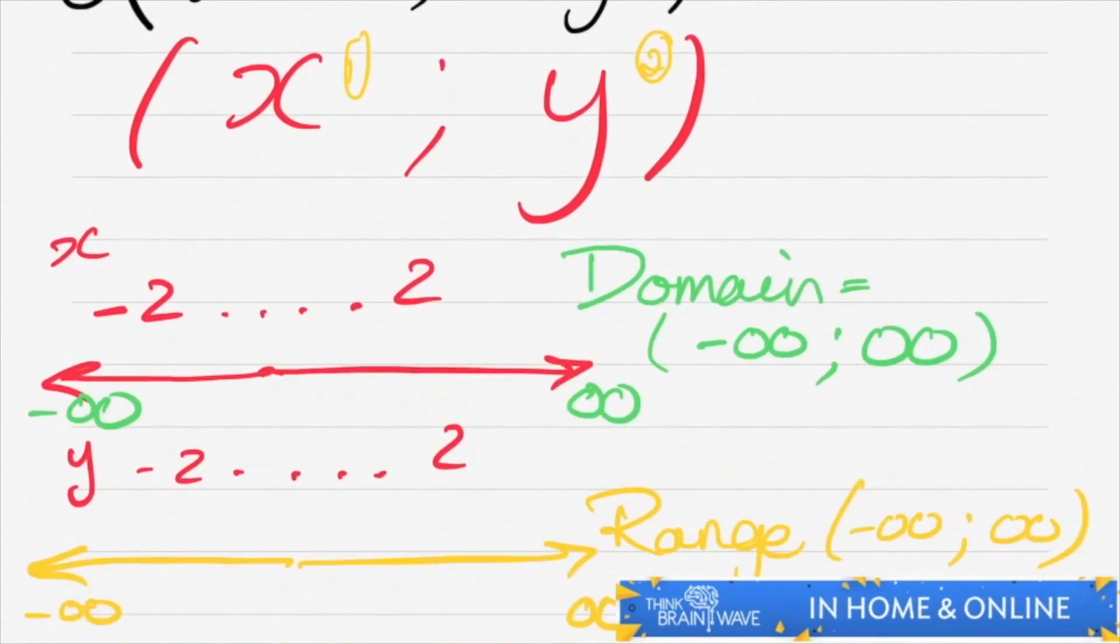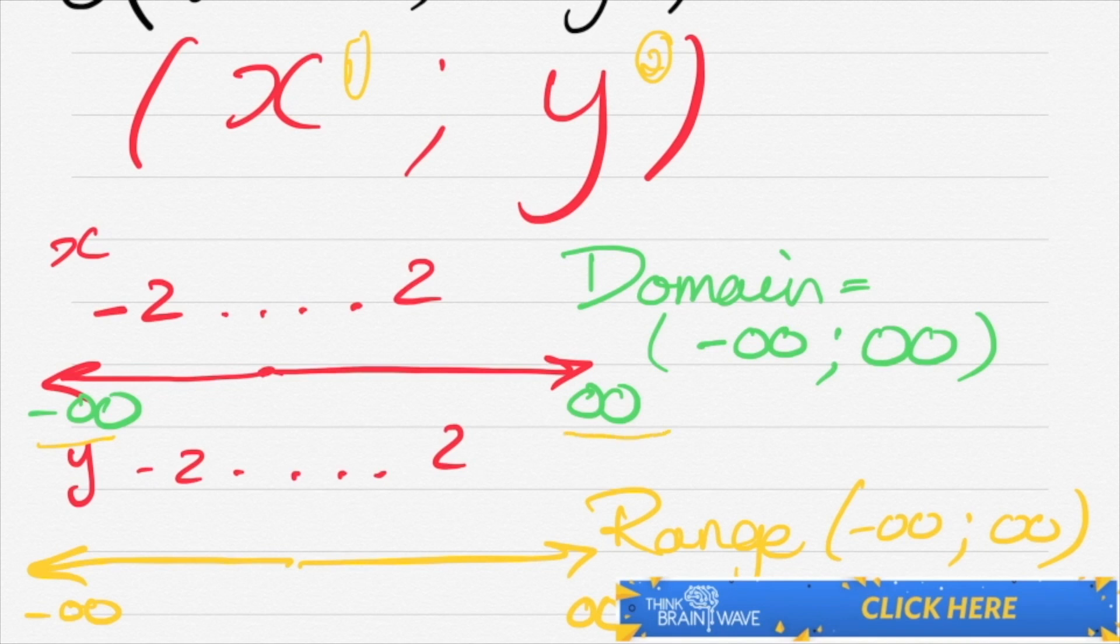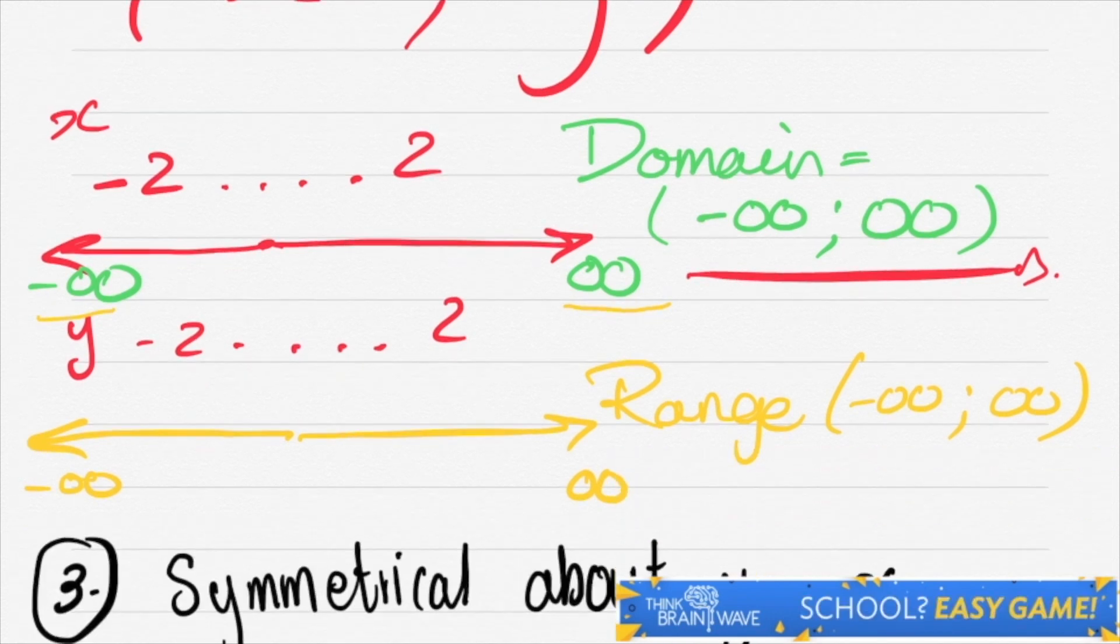So therefore, we say x tends to negative infinity here and tends to infinity. As you can see, I've written it over here. Same goes for y. And we then get negative infinity tending to infinity, as we see over here.